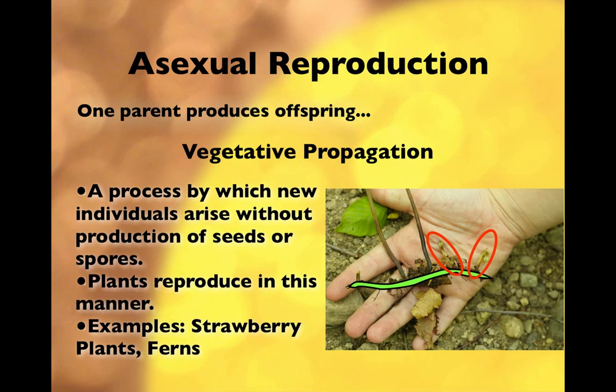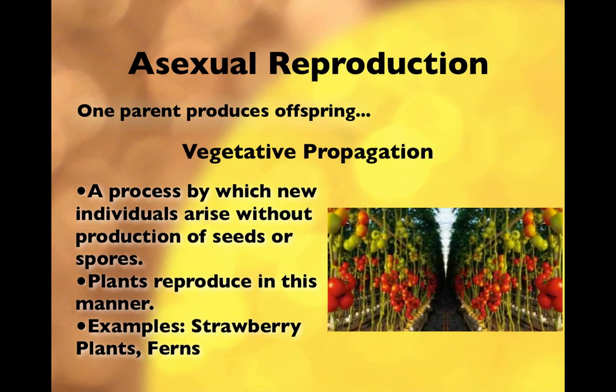One good thing about vegetative propagation is it's very useful in agriculture. With artificial vegetative propagation, you take a clipping of a plant — you can do this at home with carrots — put it in water or another growing medium, and you'll get a new plant genetically identical to the one you cut it from. If you're growing tomatoes and you have a plant that produces big juicy tomatoes, take a cutting, give it the right nutrients, sunlight, and water, and you'll get a whole bunch of tomatoes.